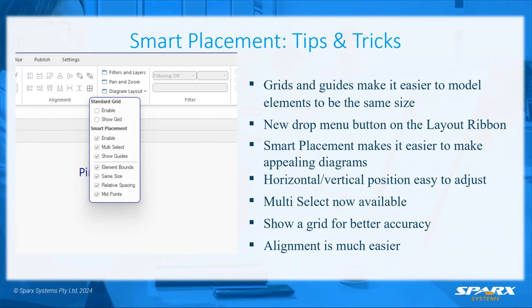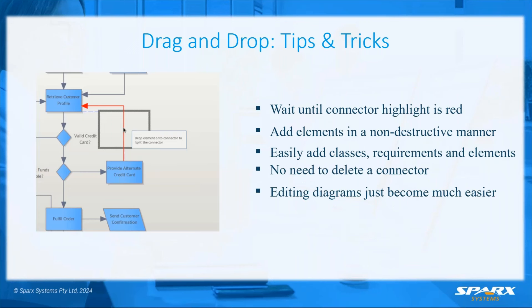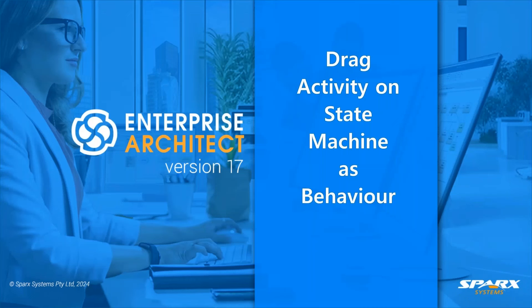To recap some of the things we've looked at: smart placement tricks including grids and guides that make it easier to model elements and ensure things are the same size; the new dropdown menu for the layout ribbon; smart placement options for creating visually appealing diagrams; horizontal and vertical positioning to adjust diagrams; and multi-select so you can select five or six elements on screen and snap them in place. For drag and drop, you simply wait until the connector is highlighted in red and you can add an element in a non-destructive manner — easily adding classes, requirements, and more without needing to delete the connector.